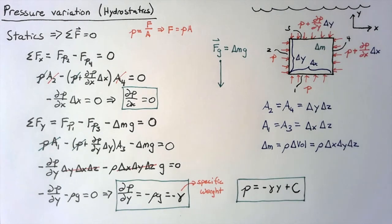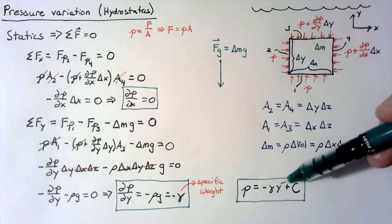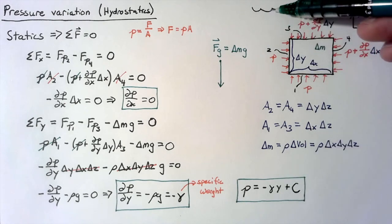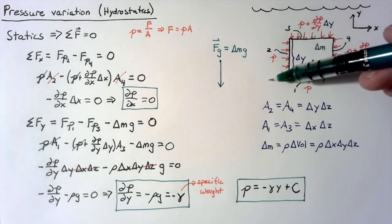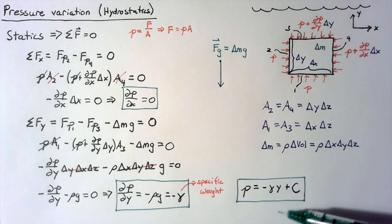And what this means is that if we know the pressure at any point, let's say that we know the pressure at the surface here is one atmosphere, since we're assuming that we're on earth. Well, if we know the specific weight of water, we can just track how we're moving downward and we can see how the pressure will increase.